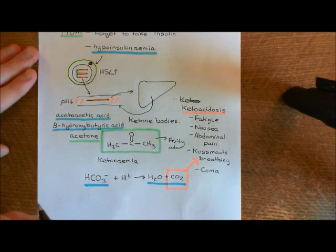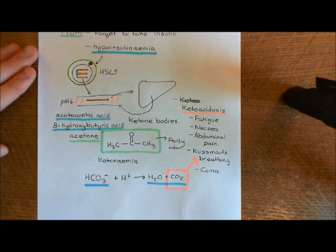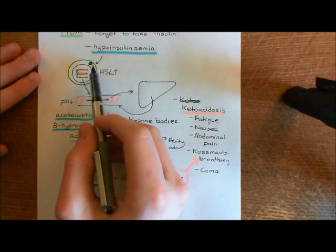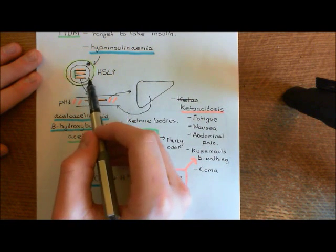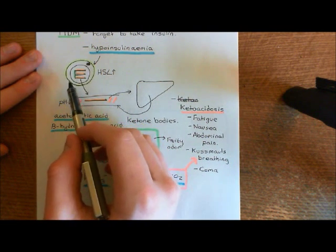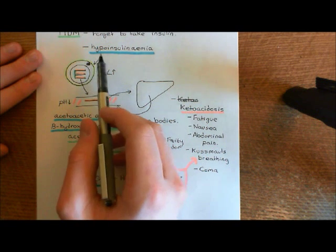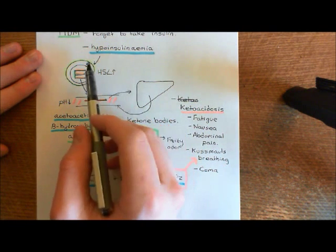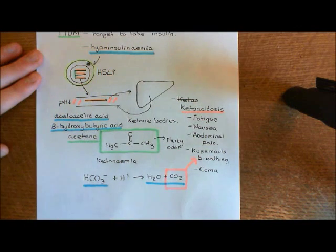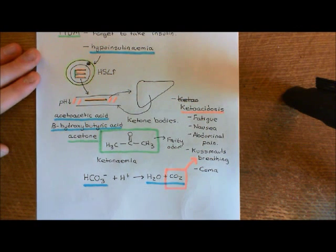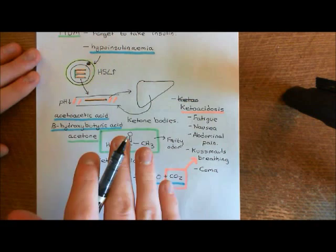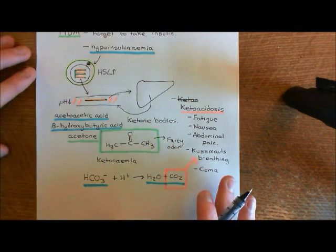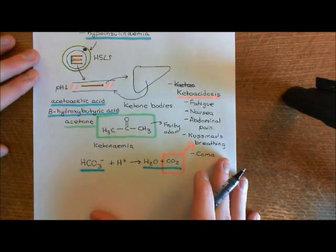In type 2 diabetes mellitus, remember, there is insulin resistance rather than an absolute deficiency in insulin. So yes, insulin signaling to the adipocytes will be reduced due to insulin resistance, but it won't be reduced as much as in type 1. So you're not going to get as many ketone bodies produced, and therefore you are less likely to develop diabetic ketoacidosis.